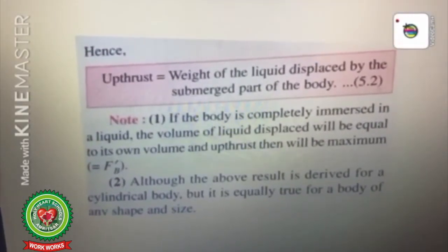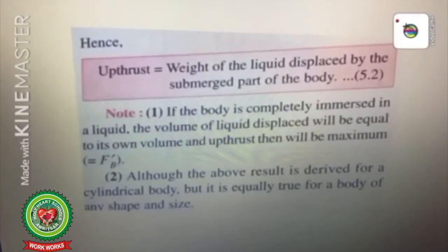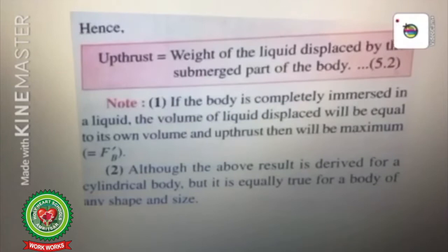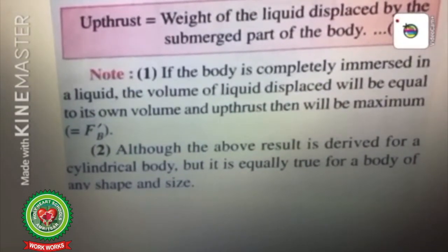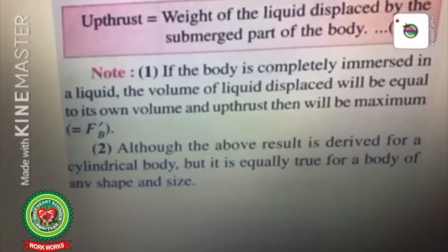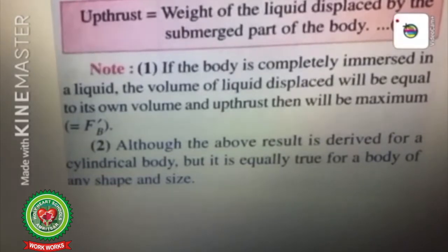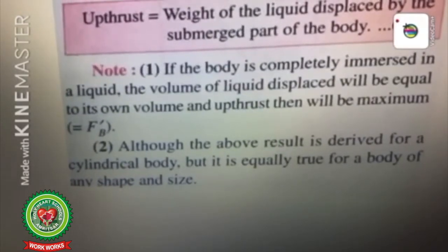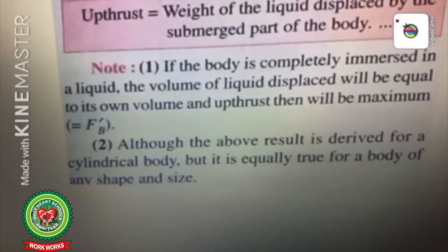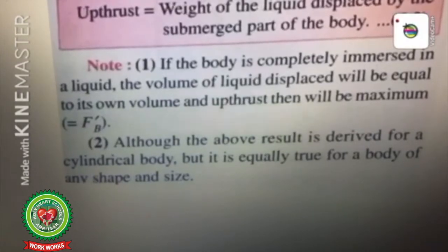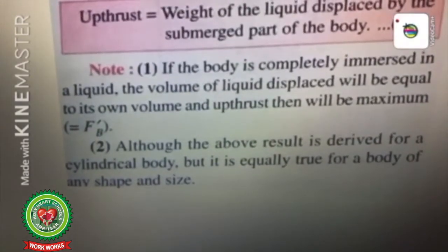We have proved that upthrust equals the weight of the liquid displaced by the submerged part of the body. Some important points to note: First, if the body is completely immersed in a liquid, the volume of liquid displaced will be equal to its own volume and the upthrust will be maximum. Second, although the above result is derived for a cylindrical body, it is equally true for a body of any shape and size.